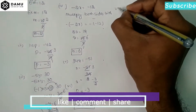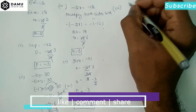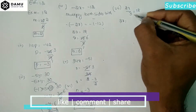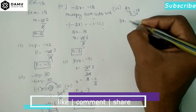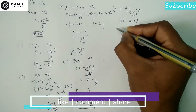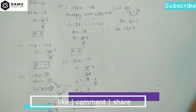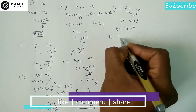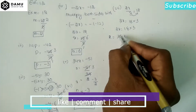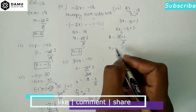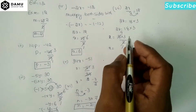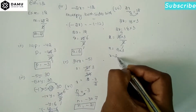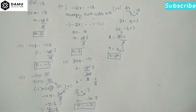The seventh one: 2x/3 = 18. Keep 2x as it is and shift 3 to the right side — since it is in division it becomes multiplication — so 2x = 18 × 3 = 54. Then x = 54/2 = 27.